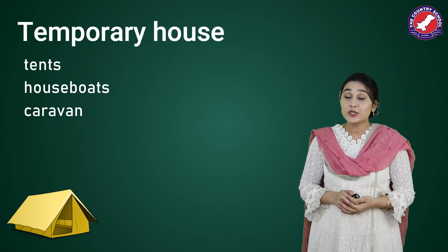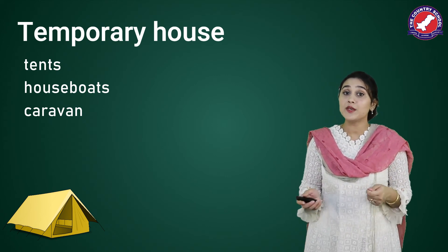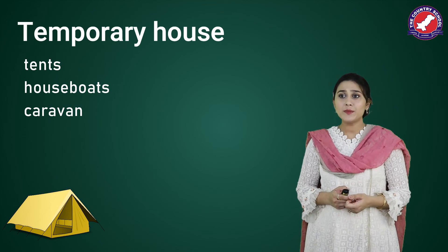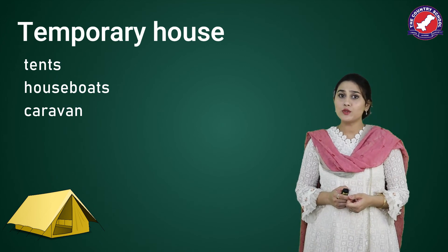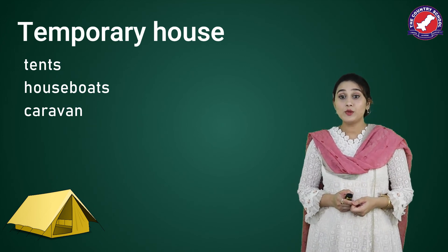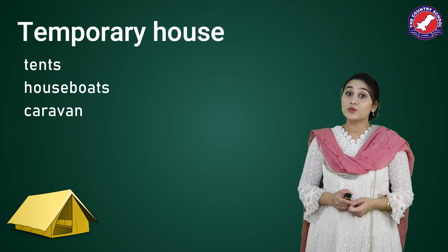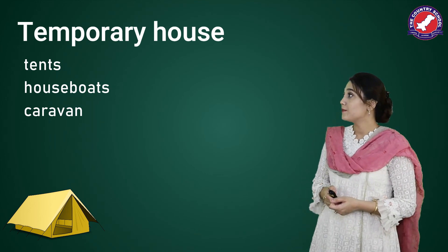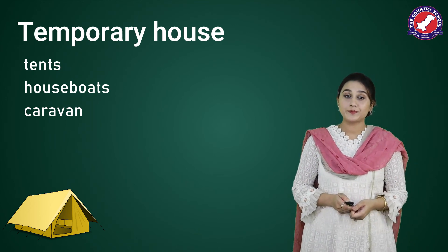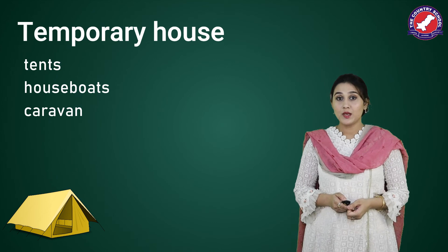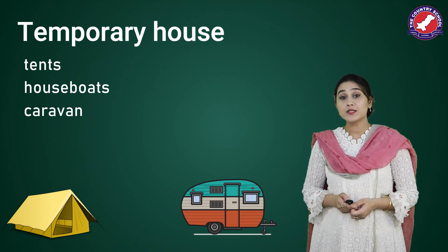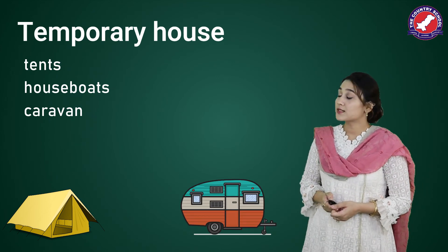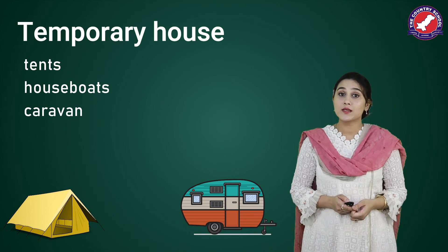This means it's portable — portable means it can be moved around. The people who move around are mostly those who have to switch places, like soldiers or campers. Now, what is a caravan? A caravan is a house with wheels, which is pulled by horses or cars.